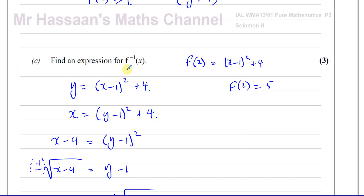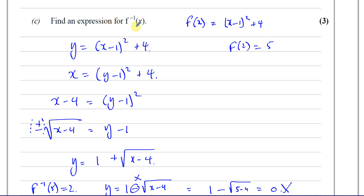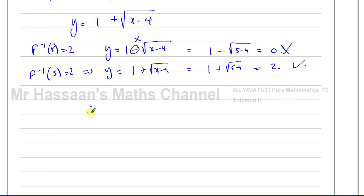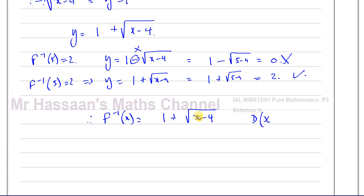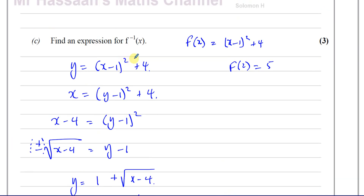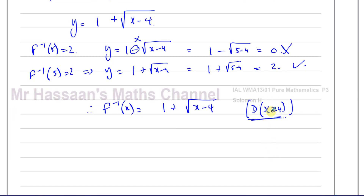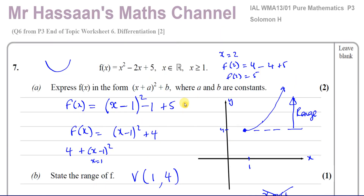They didn't ask us to write down the domain here, but if a question says 'find the inverse of f(x)' rather than just 'find an expression for it,' we should also give its domain. The domain of the inverse is the same as the range of the original function, but written in terms of x. So the domain would be x ≥ 4.